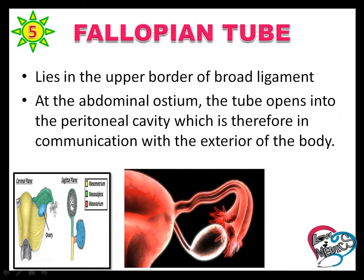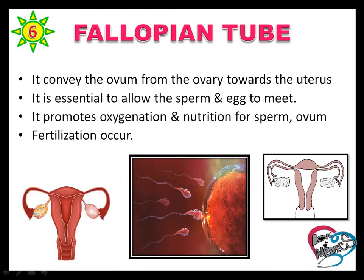The fallopian tube lies in the upper border of the broad ligament. At the abdominal ostium, the tube opens into the peritoneal cavity, which is communicated with the exterior of the body by the uterus and vagina. The fallopian tube conveys the ovum from the ovary to the uterus, is essential for the sperm and egg to meet, promotes oxygenation and nutrition for the sperm and ovum, and fertilization occurs in the fallopian tube.